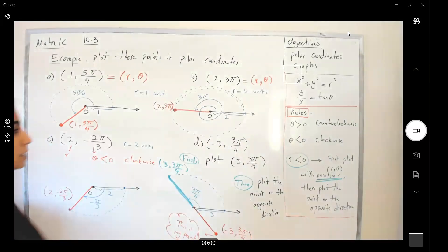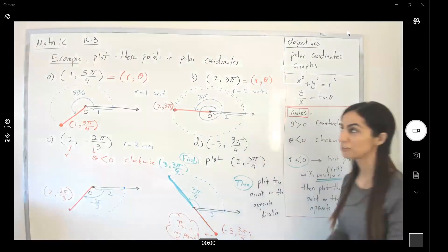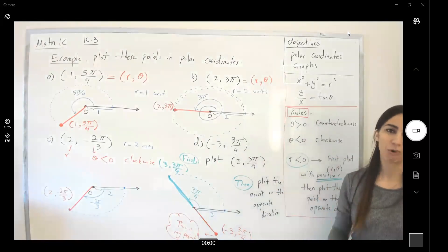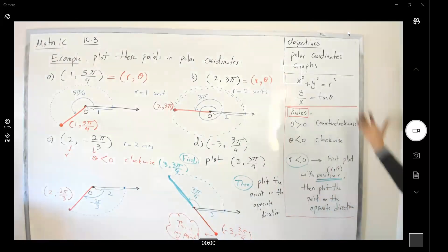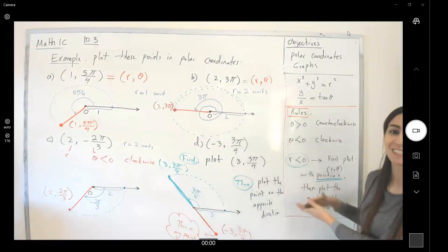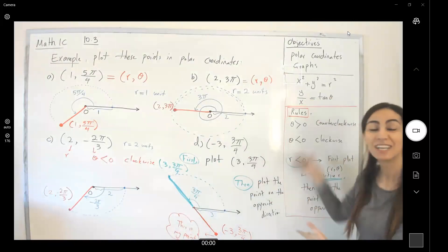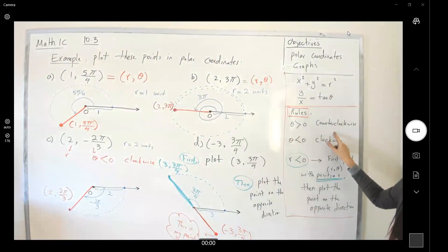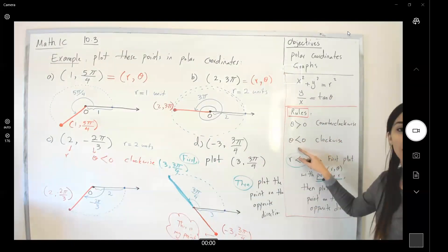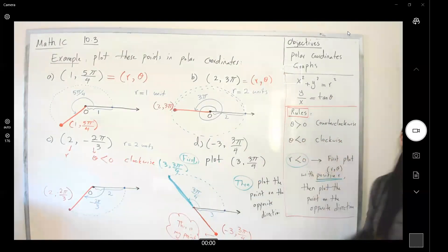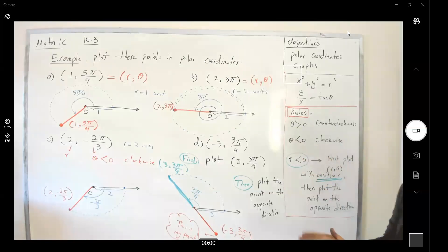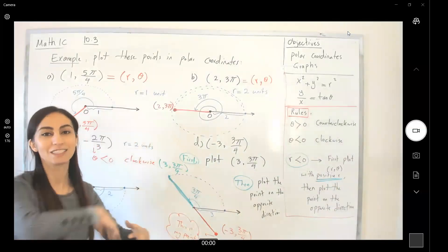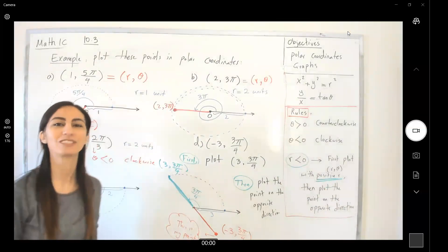This is how we graph polar coordinates. The rules and conventions are: theta positive means counterclockwise; theta negative means clockwise. If r is negative, first plot with positive r, then use the opposite direction.